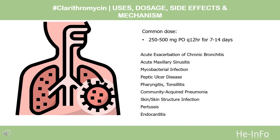The dose of this medicine will be different for different patients. For acute exacerbation of chronic bronchitis, indicated for mild to moderate infections caused by susceptible isolates of Haemophilus influenzae, Haemophilus parainfluenzae, Moraxella catarrhalis, or Streptococcus pneumoniae: 250–500 mg PO every 12 hours for 7–14 days. Extended release: 1,000 mg PO once daily for 7 days.